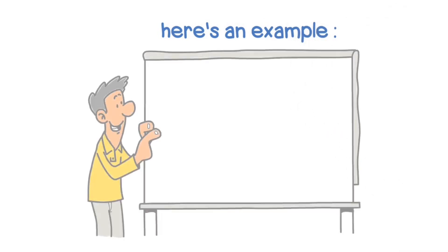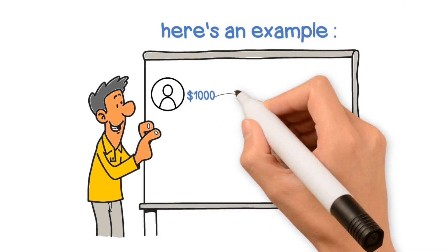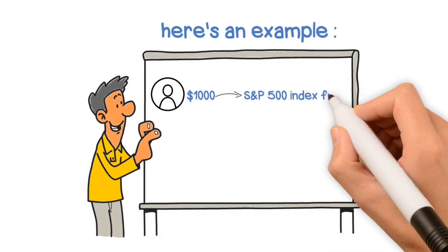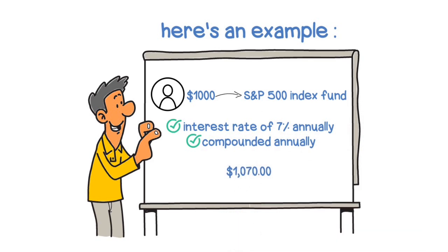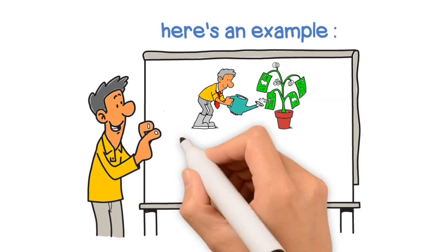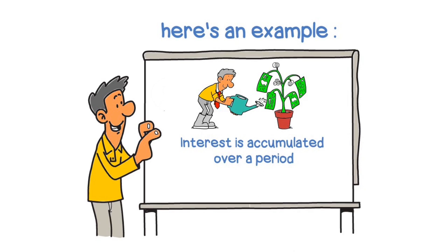Here's an example: If you deposit $1,000 into the S&P 500 index fund with an interest rate of 7% annually compounded annually, you will have $1,070 at the end of the first year. Interest is accumulated over a period resulting in annual compounding by leaving your money in the account.